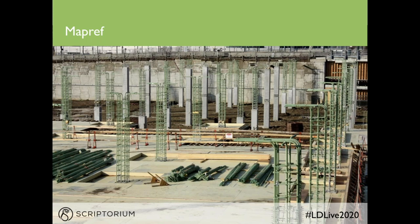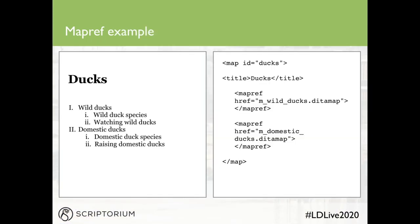In addition to linking to topics, you can reference other map files inside a map file. A subordinate map or sub map is usually a collection of related content, which means you can reuse that sub map in many other maps. Here we see a map containing two map refs — one to m_wild_ducks and another to m_domestic_ducks. On the left you see not just the names of those maps, but the titles of the content within them: wild ducks points to 'wild duck species' and 'watching wild ducks.' Those titles are pulled into the table of contents by your DITA processor.